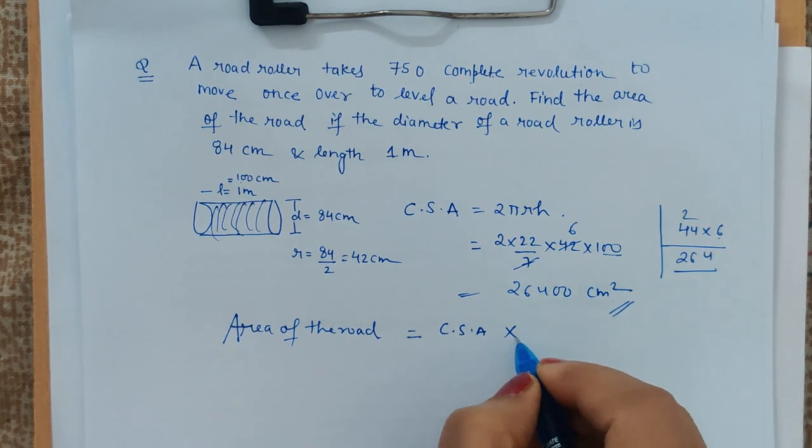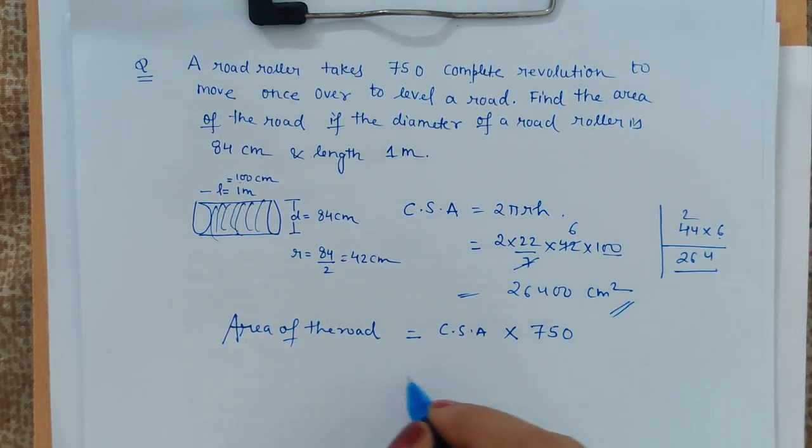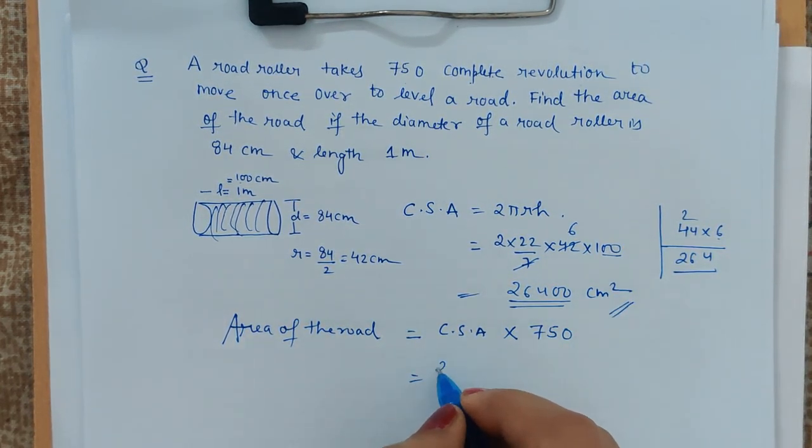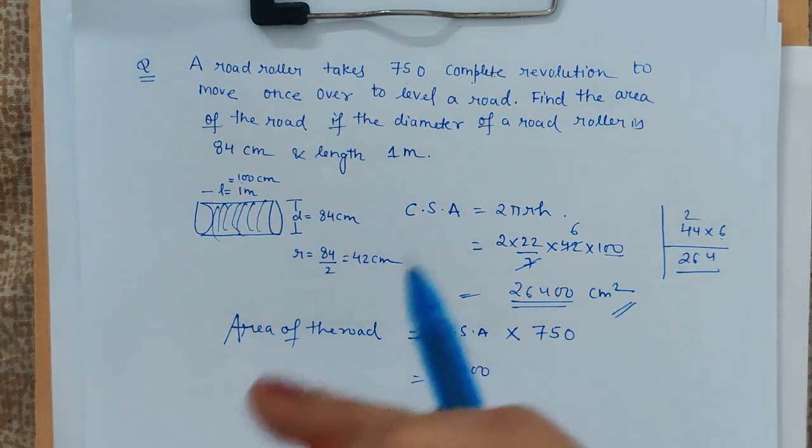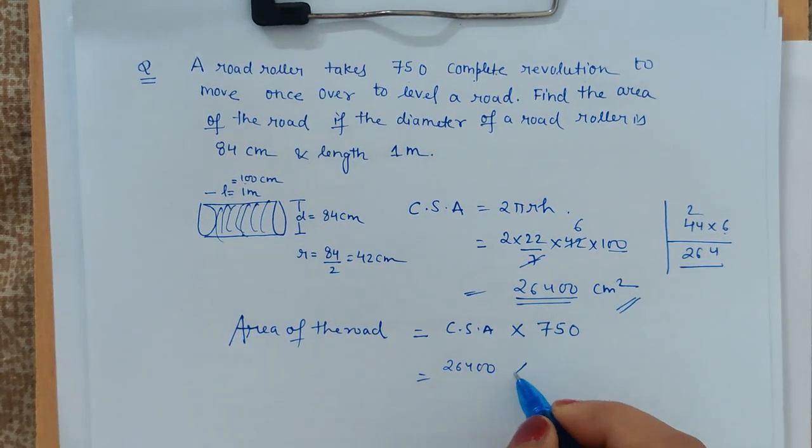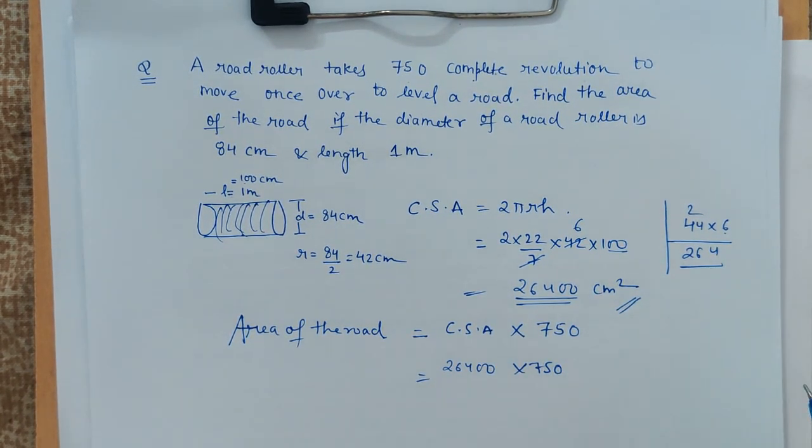This we have already calculated: 26,400 is the area covered by the road roller after its one revolution. And how many revolutions it takes? 750.